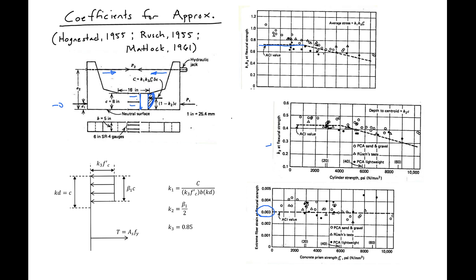where Kd is the distance to our neutral axis, K3 times F'c is the height of our equivalent stress block, and beta1 is the width of our equivalent stress block.